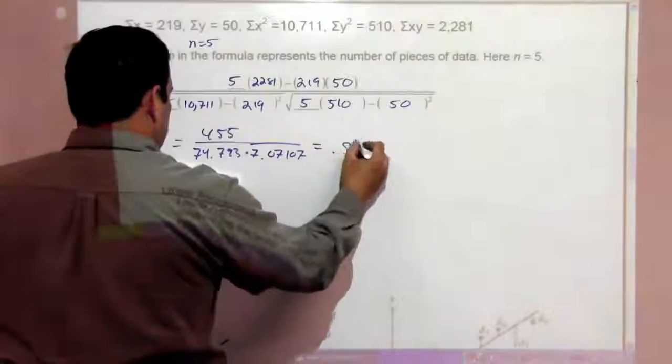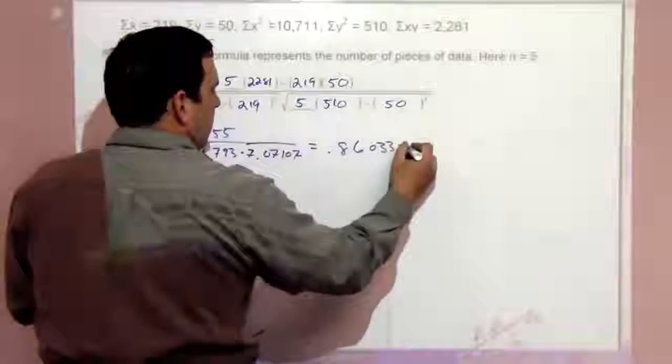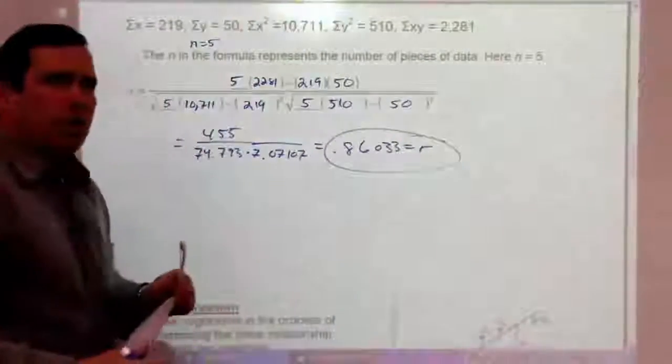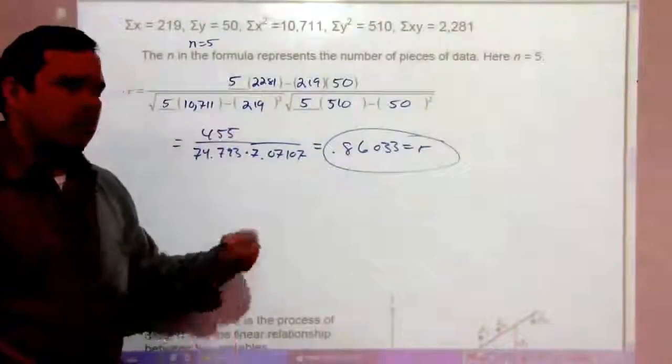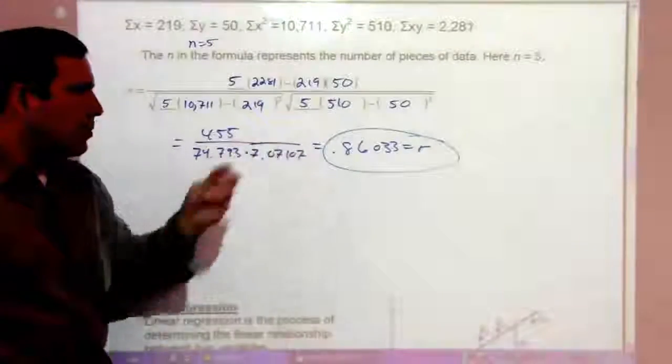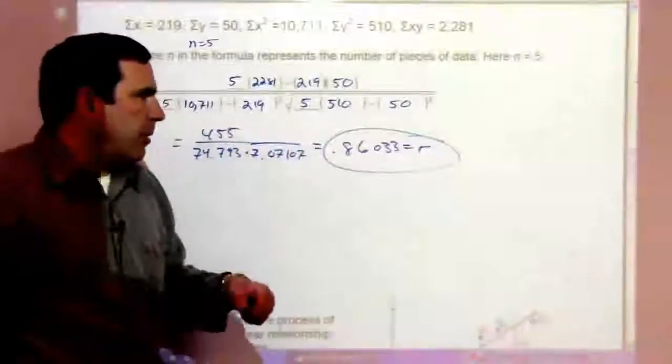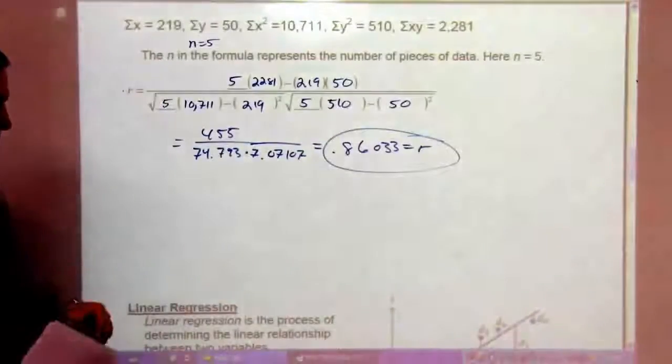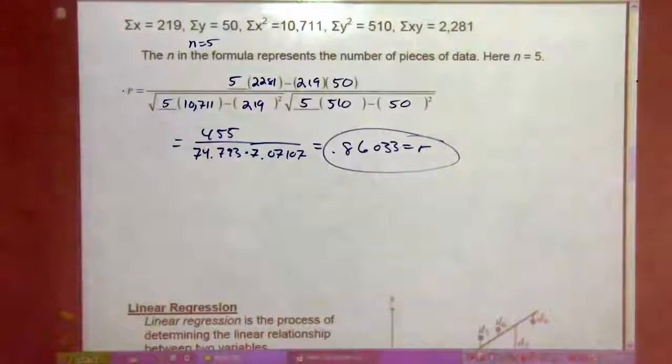And that's going to be 0.86033 is the R. And that's a pretty good correlation. I mean, you're rarely going to get it to be 1, especially when you do experimental data. That's pretty good. Anything above 0.8 is really good. I'd call that a strong relationship.